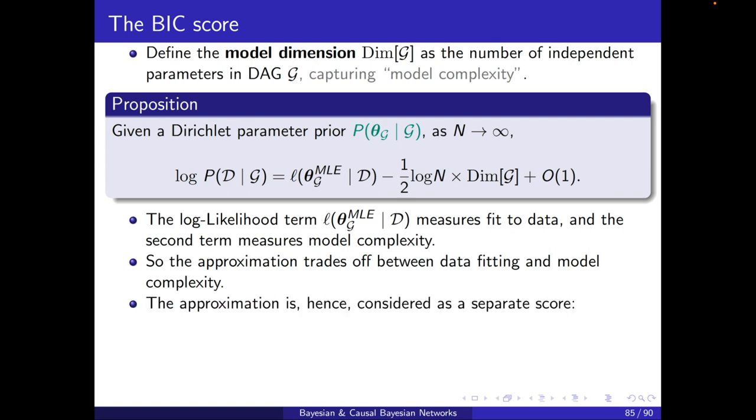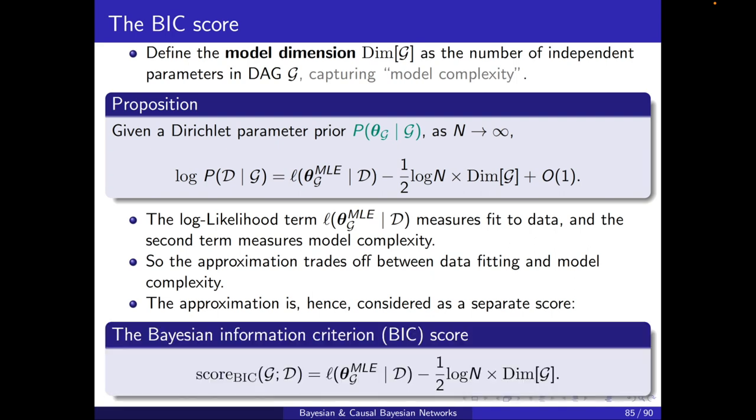And this is why this approximation is considered as a separate score. It is called the BIC, the Bayesian Information Criterion Score. It's equal to the log likelihood minus 1/2 log(N) times dimension of G. So, you see that it's penalizing the complexity of the model.